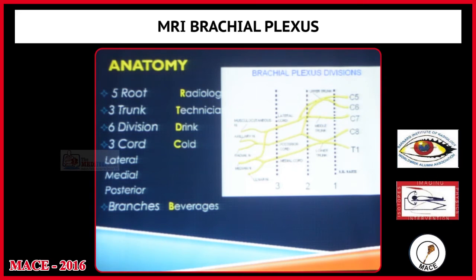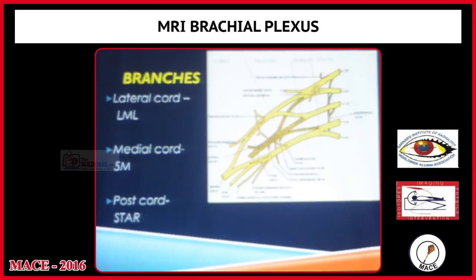Each trunk divides into anterior and posterior divisions. All posterior divisions combine to form the posterior cord. The upper and middle trunk anterior divisions combine to form the lateral cord, while the lower trunk's anterior division continues as the medial cord.